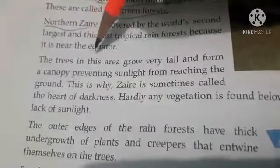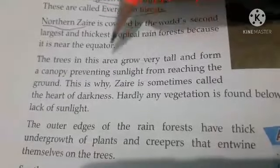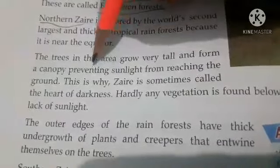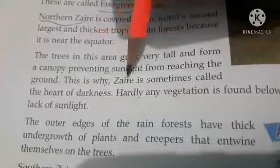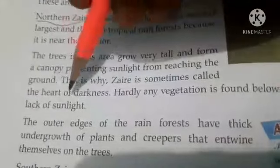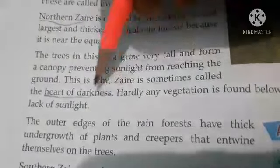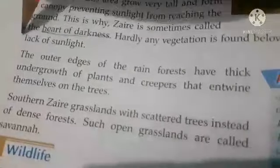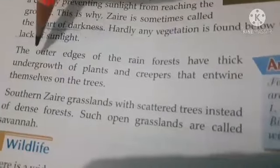The trees in the area grow very tall and form a canopy, preventing sunlight from reaching the ground. That is why Zaire is sometimes called the 'Heart of Darkness' — because the trees are so high that sunlight cannot reach the ground. Hardly any vegetation is found below the canopy due to the lack of sunlight.